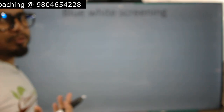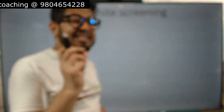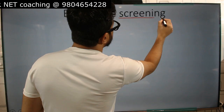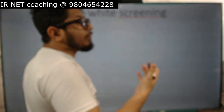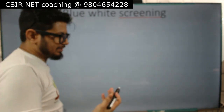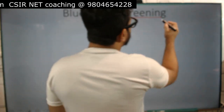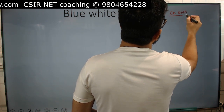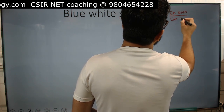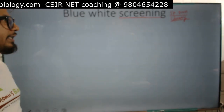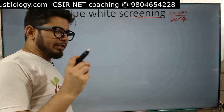So what is blue-white screening all about? Focus on this term 'screening.' Screening for what? Basically, we are talking about screening of gene libraries. We are screening specific DNA or target DNA from a library of genes — from a genomic DNA library we want to screen.